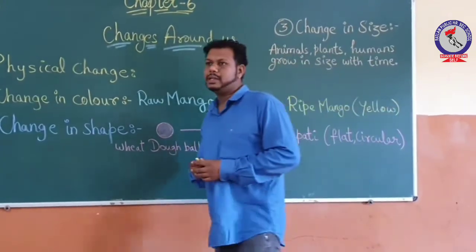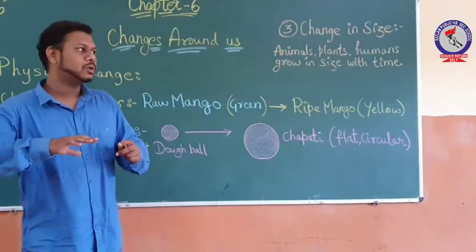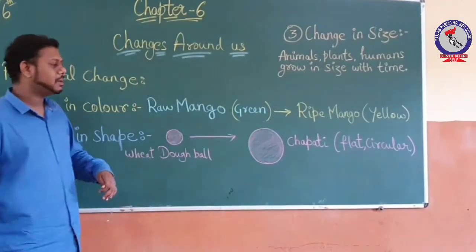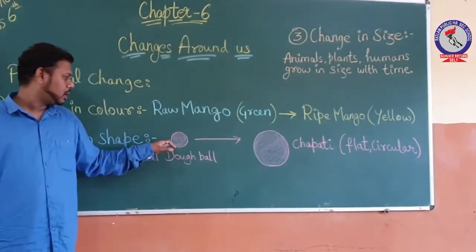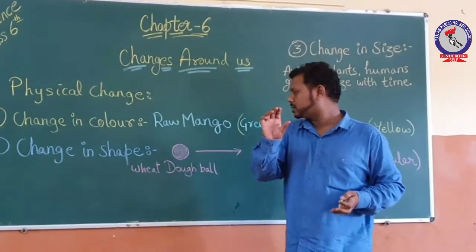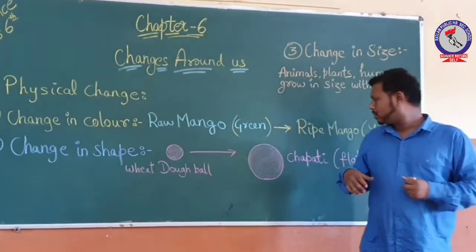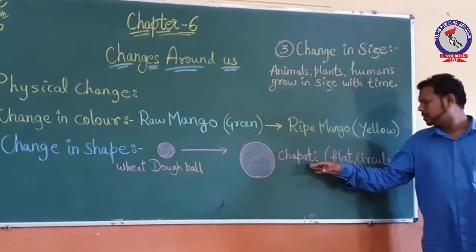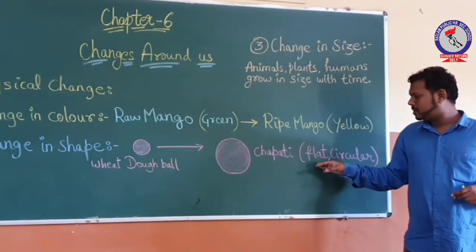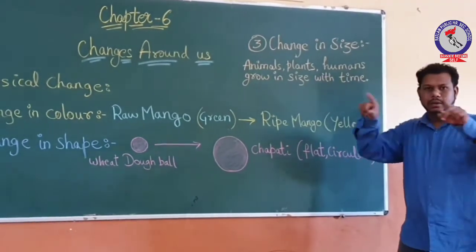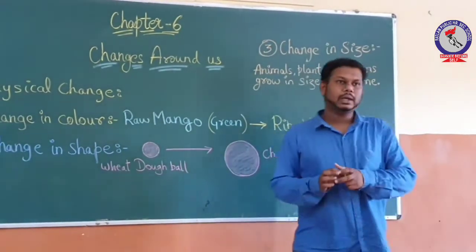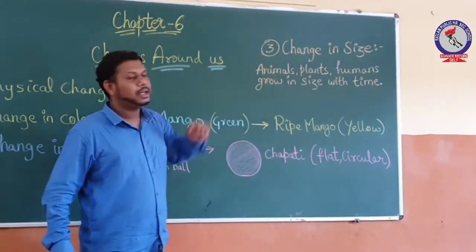The second thing is change in shape. Change in shape means any object undergoes changes by applying pressure or by any condition. We take the example of wheat dough. If we roll the dough it will form into the shape of a ball, and if we roll it again it will convert into a chapati — we call it roti. The shape changes to flat, circular.